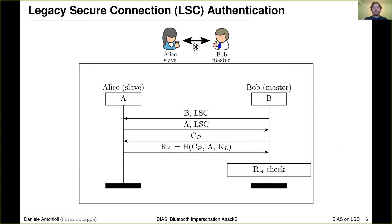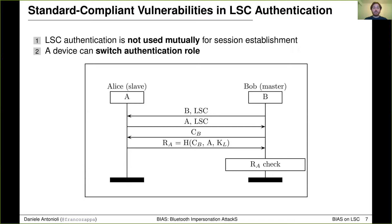In our paper, we uncovered that LSC authentication has two main issues. Firstly, it is not used mutually during session establishment — in particular, only the master authenticates the slave and not vice versa. Secondly, a device can switch authentication role before the procedure starts by triggering a Bluetooth role switch. We take advantage of these two vulnerabilities to design master and slave impersonation attacks on LSC authentication.